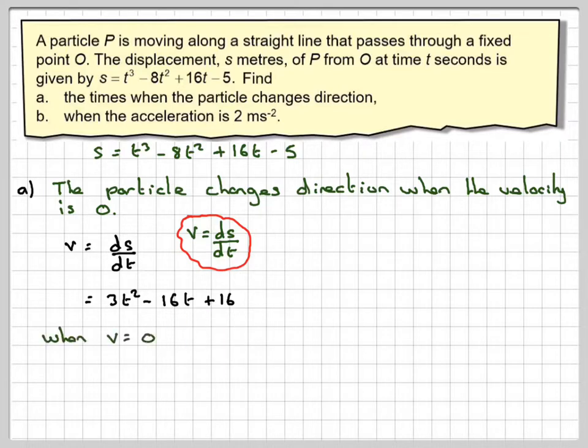So we need to put that equal to 0. So when V is equal to 0, we get 3t squared minus 16t plus 16 is equal to 0.